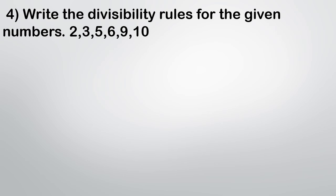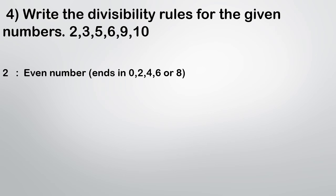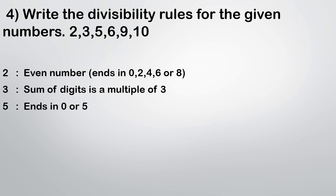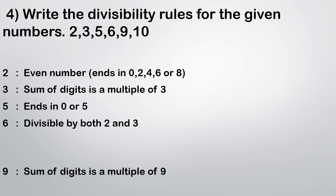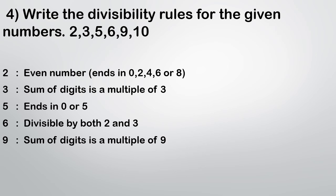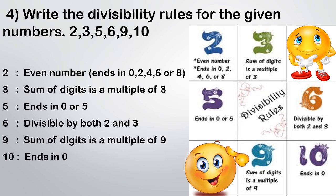The 4th sum asks us to write the divisibility rules for given numbers: 2, 3, 5, 6, 9, and 10. For 2: the number should be even, ending in 0, 2, 4, 6, or 8. For 3: the sum of digits is a multiple of 3. For 5: the number ends in 0 or 5. For 6: divisible by both 2 and 3. For 9: sum of digits is a multiple of 9. For 10: ends in 0. Keep these divisibility rules in mind.